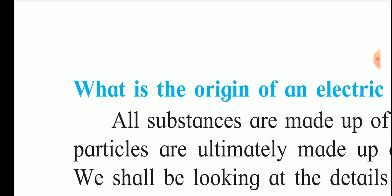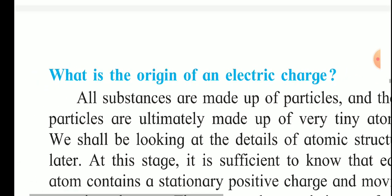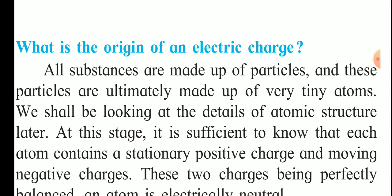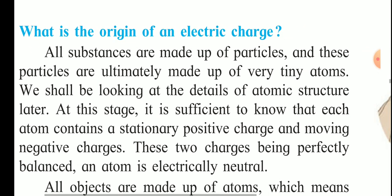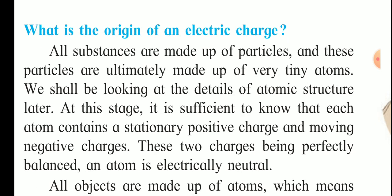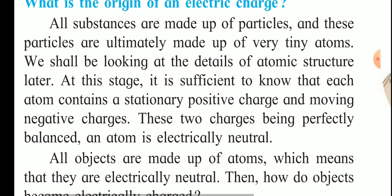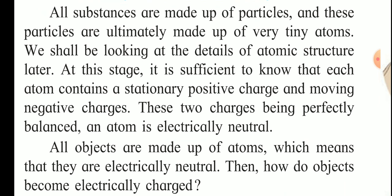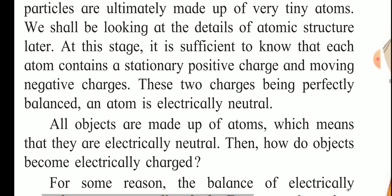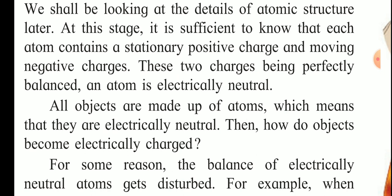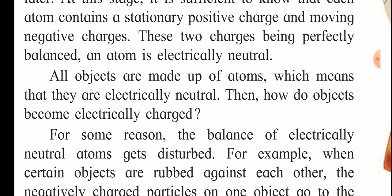Now let us see the origin of electric charge. All substances are made up of particles, and these particles are ultimately made up of tiny atoms. Looking at the atomic structure, each atom contains a stationary positive charge and moving negative charges. These two charges are perfectly balanced, so an atom is electrically neutral. All objects are made up of atoms, which means they are electrically neutral.